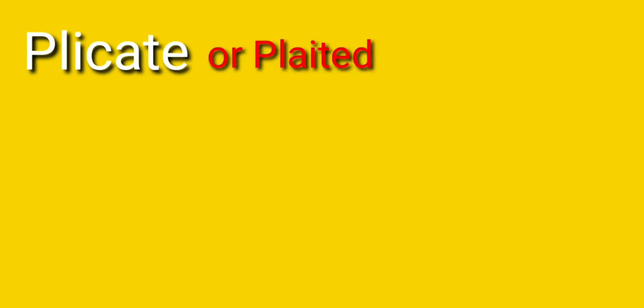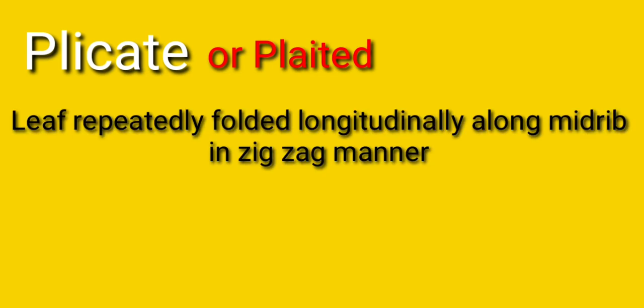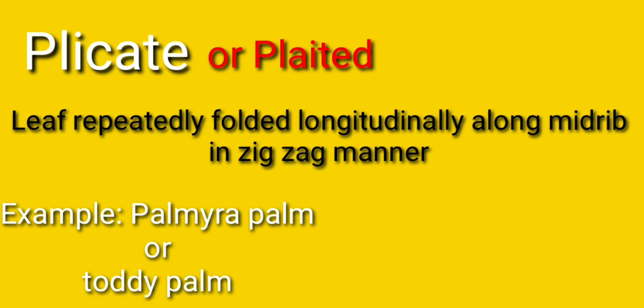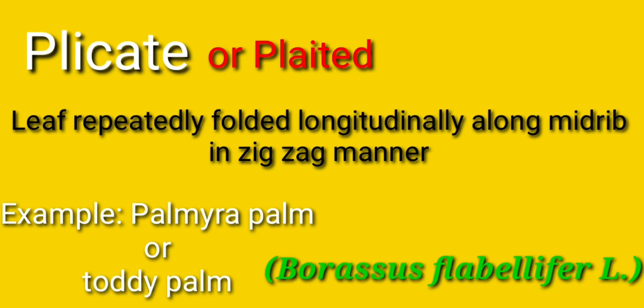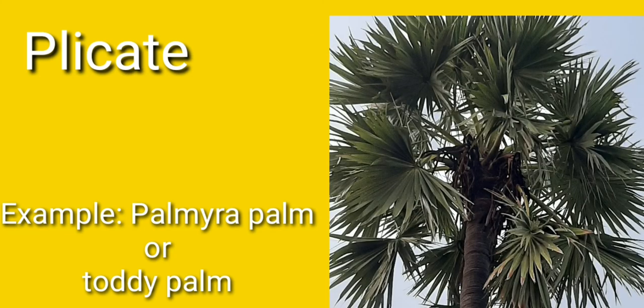Next one is the plicate, also called plicate. Here the leaf repeatedly folds longitudinally along with the midrib in a zigzag manner. Example: palmyra palm or toddy palm, binomial name Borassus flabellifer. This is the palmyra tree; the leaf has a palm-like structure with a midrib region. It folds like a paper fan which we used to play with in childhood days.